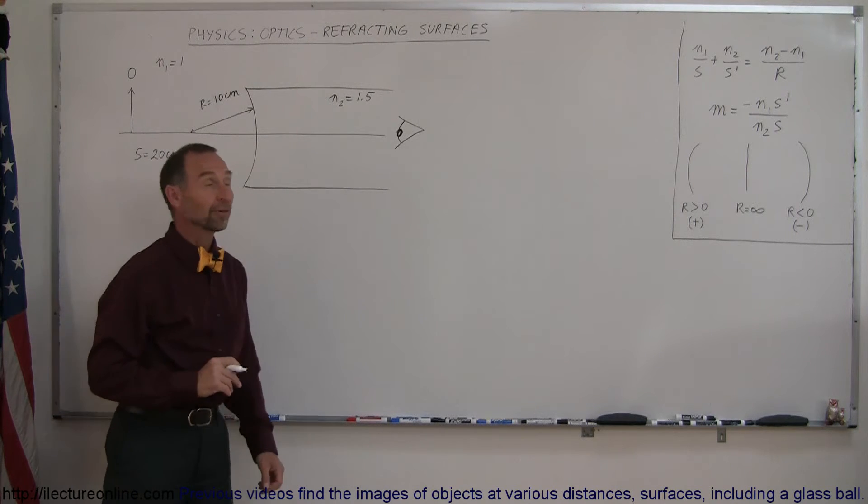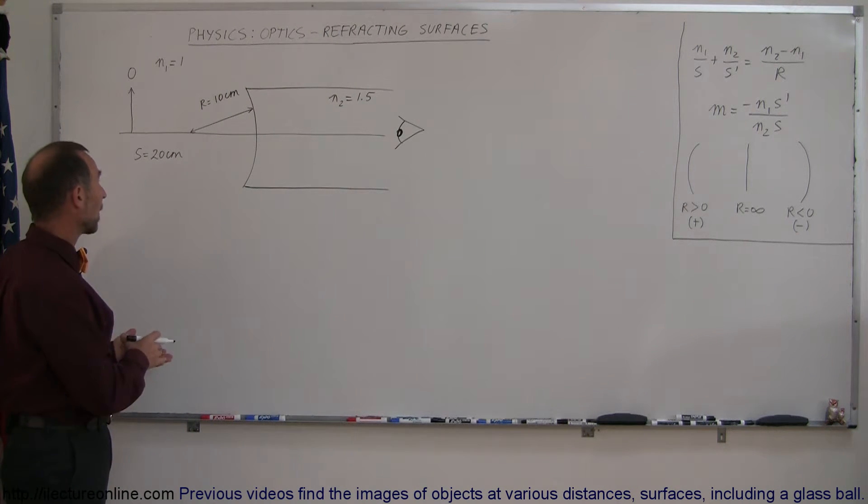And here's our last example of how to find the image from an object when the rays of light go across a refracting surface.